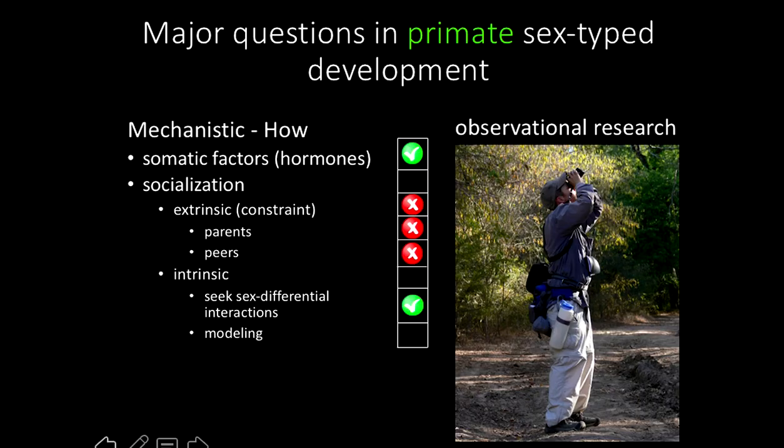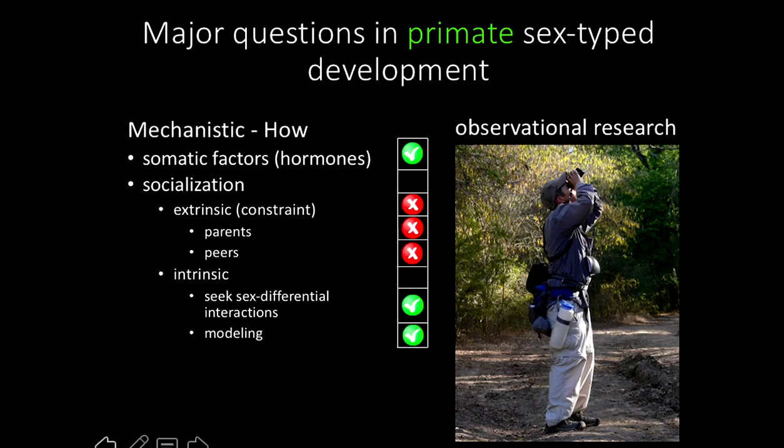So this looks like the obverse of the termite fishing data — juvenile male chimps are copying others' grooming behavior and females are not, whereas with termite fishing, juvenile females copy their mom's behavior and males do not. In summary, data showing that juvenile primates seek out sex-differential social interactions are plentiful across many species — we have the necessary precursor for behavioral modeling. The data showing that juvenile primates model their behavior after same-sex demonstrators is so far pretty spare but really compelling. I think intrinsically motivated socialization is likely to be an important factor in primate sex-typed development.